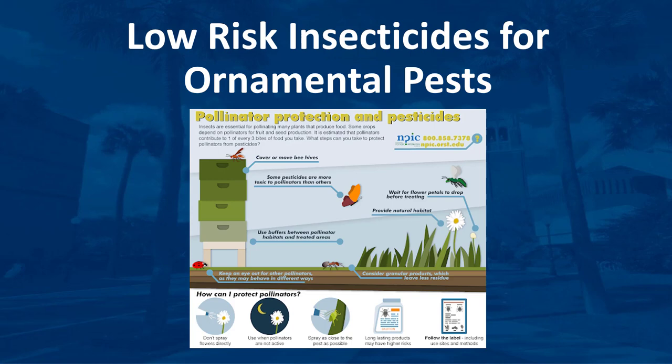An EPA-reduced-risk product is a conventional pesticide that poses less risk to human health and the environment than existing conventional alternatives. Other characteristics of low-impact pesticides are those that break down rapidly after application and therefore have minimal impact on pollinators and natural enemies. However, using these products requires some knowledge about their relative toxicity to beneficial insects and their potential to cause biotoxicity.